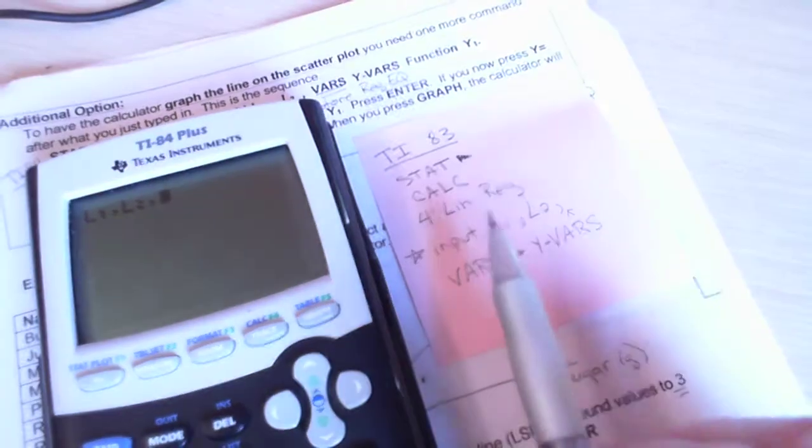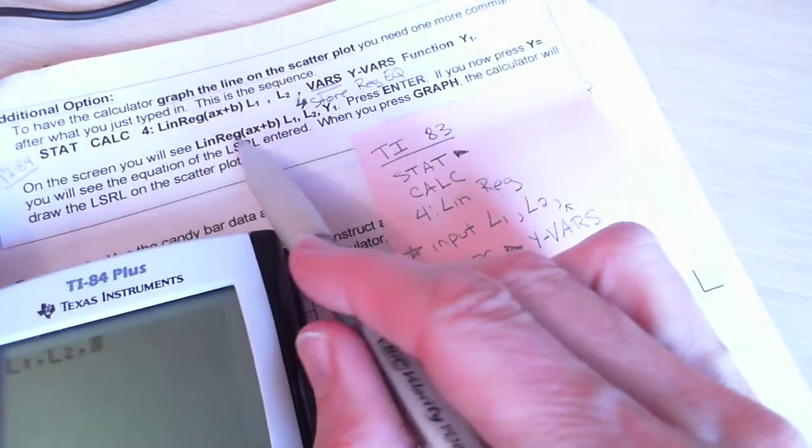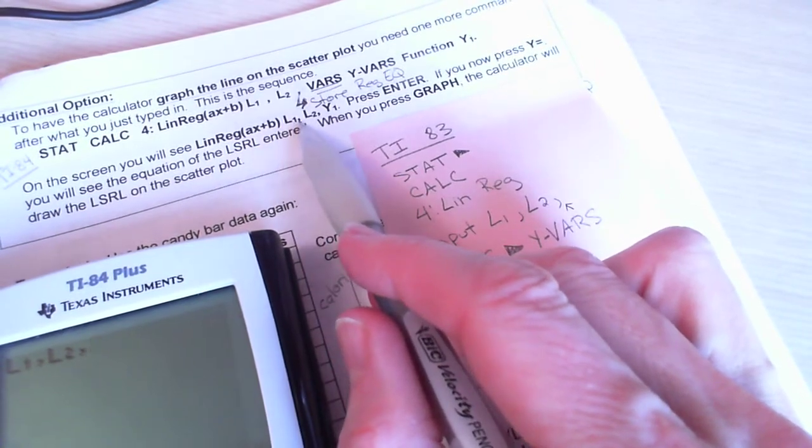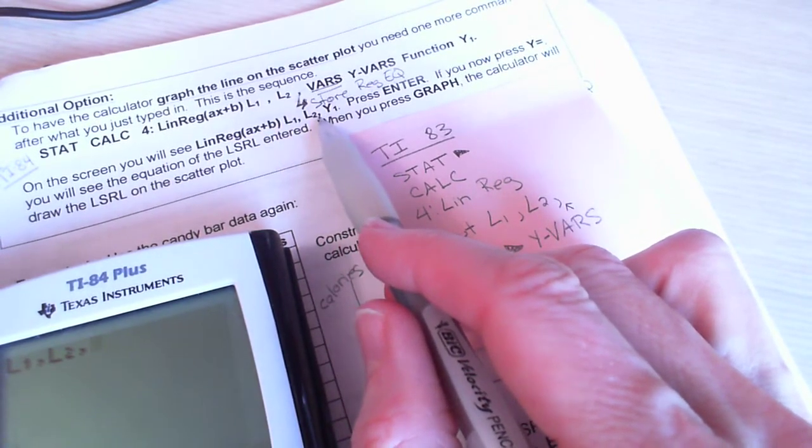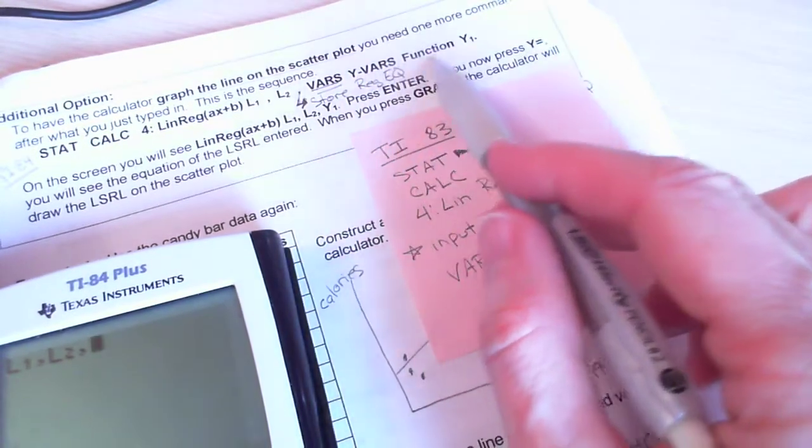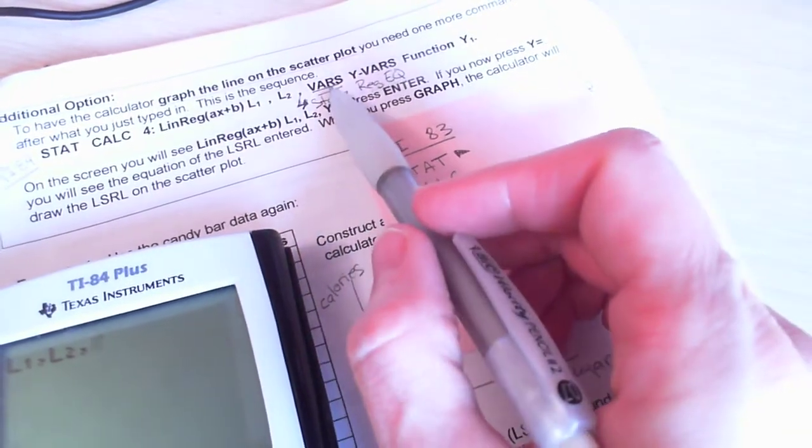Okay, so on the TI-83, you're going to put all that in right next to where it says linear regression AB. So you're going to put L1, L2, comma, and then you're not going to hit enter. Then you're going to hit vars.